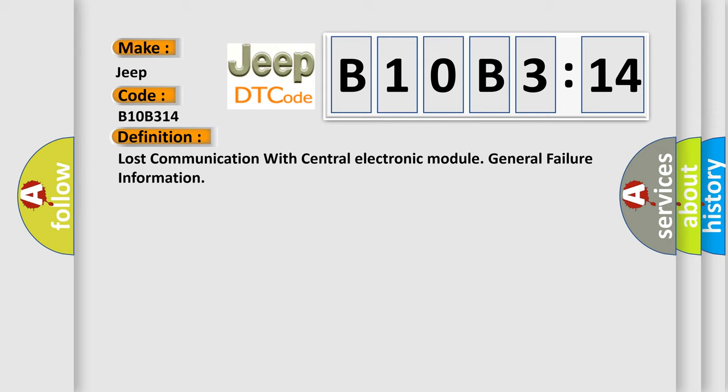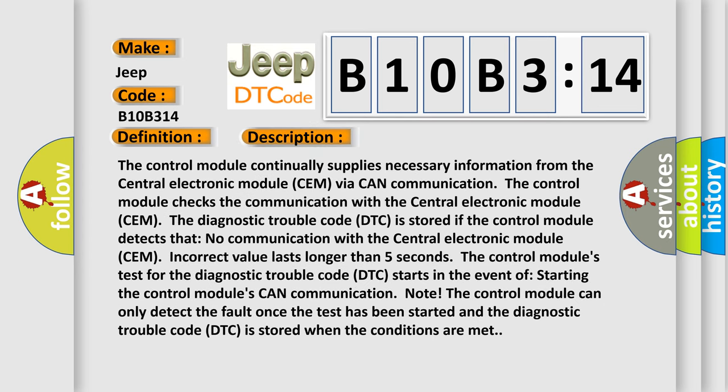And now this is a short description of this DTC code. The control module continually supplies necessary information from the central electronic module CEM via CAN communication. The control module checks the communication with the central electronic module CEM.